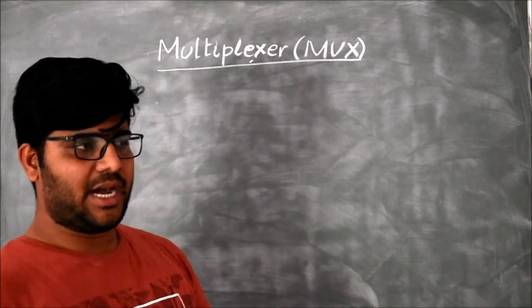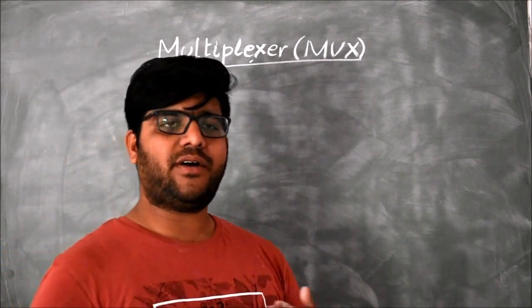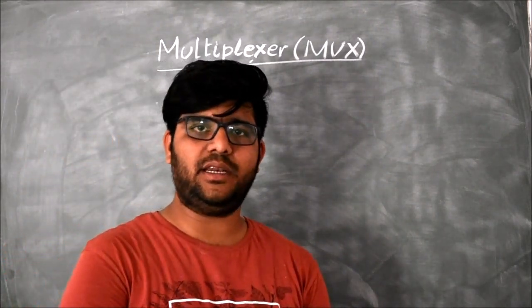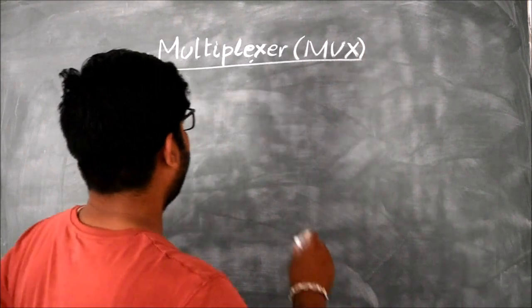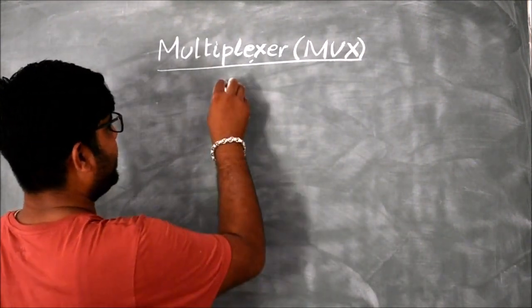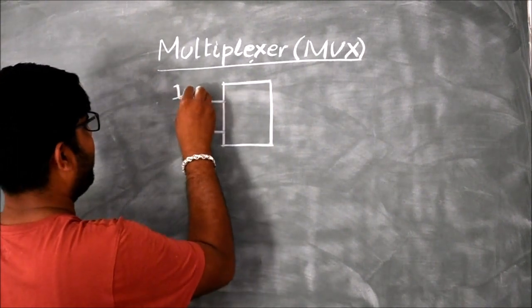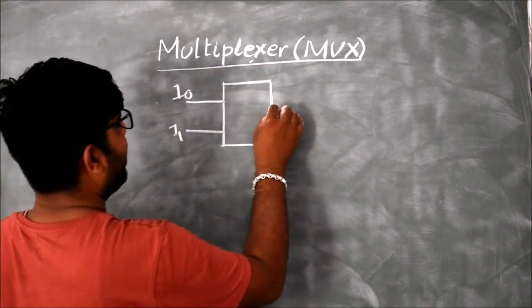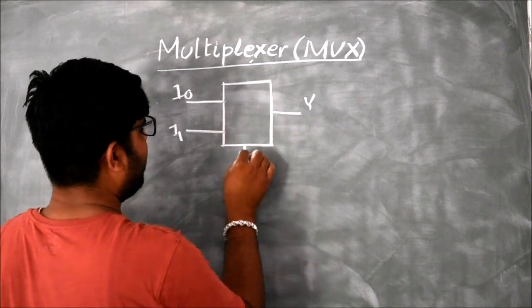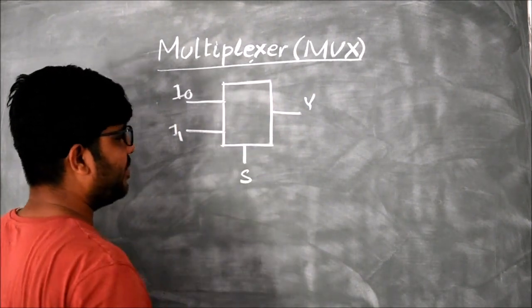Important concept is how to write the function or logical expression for a multiplexer. For example, this is a 2 cross 1 multiplexer where I am having I0 and I1, and output is Y having a selection line S.